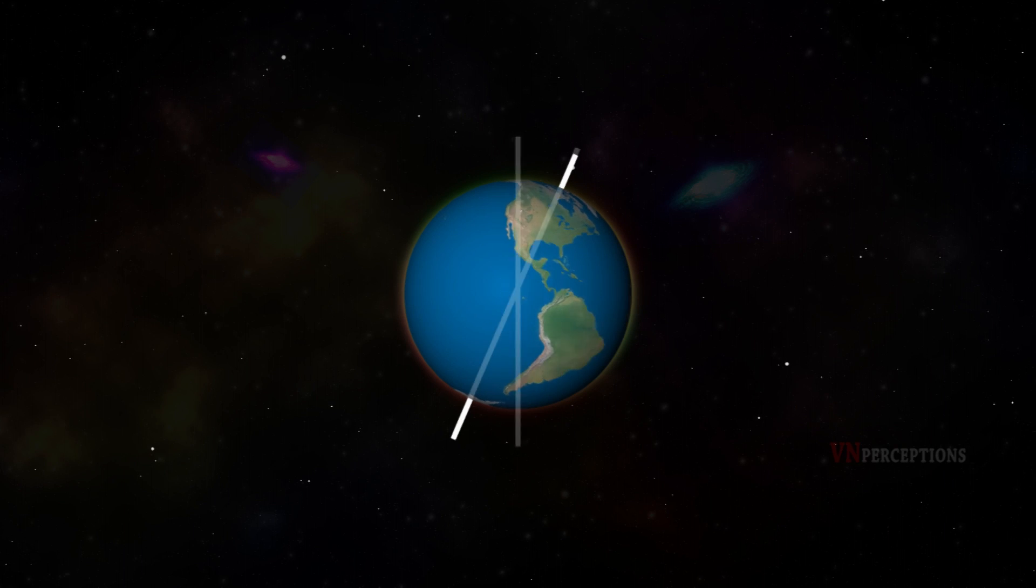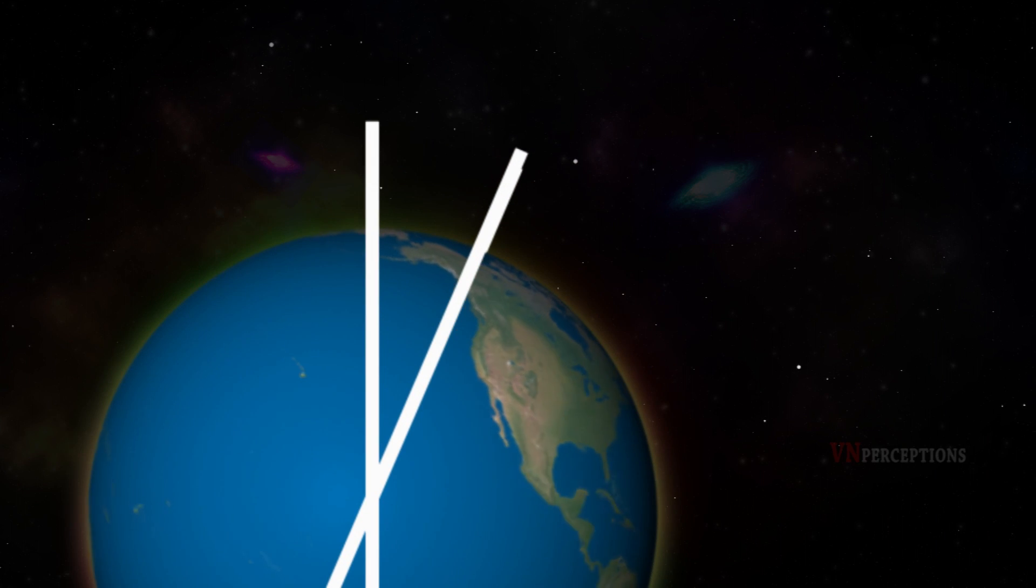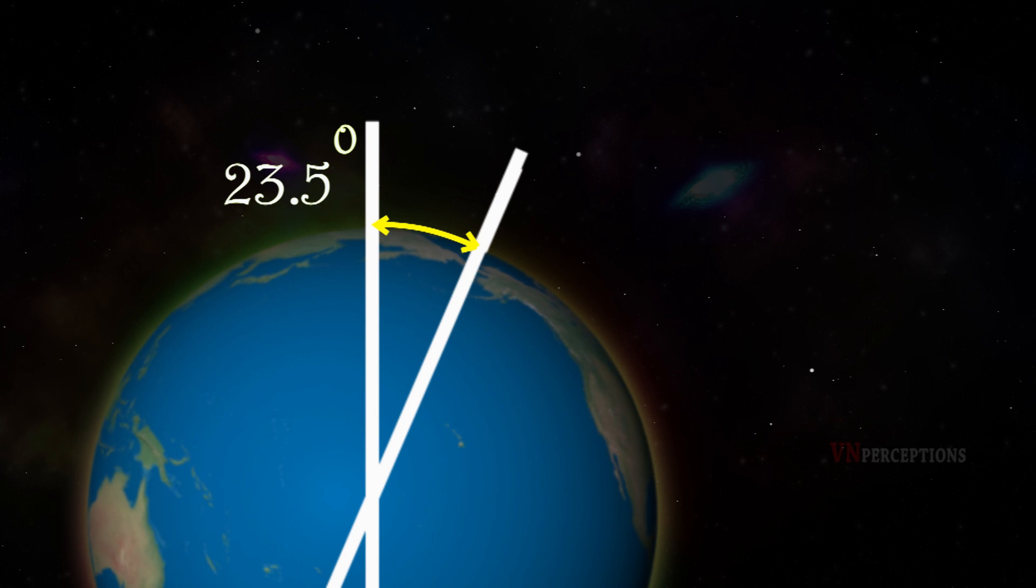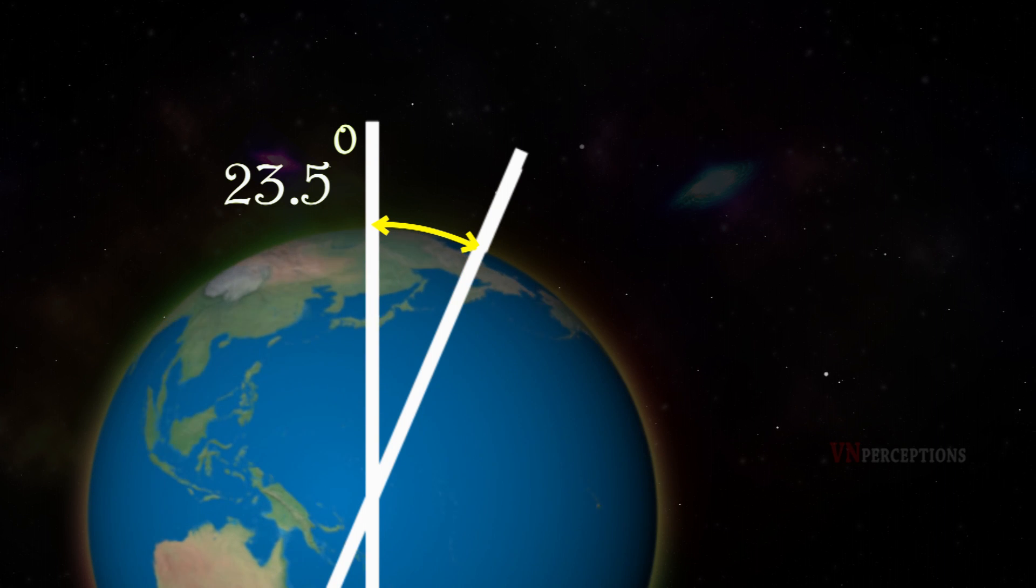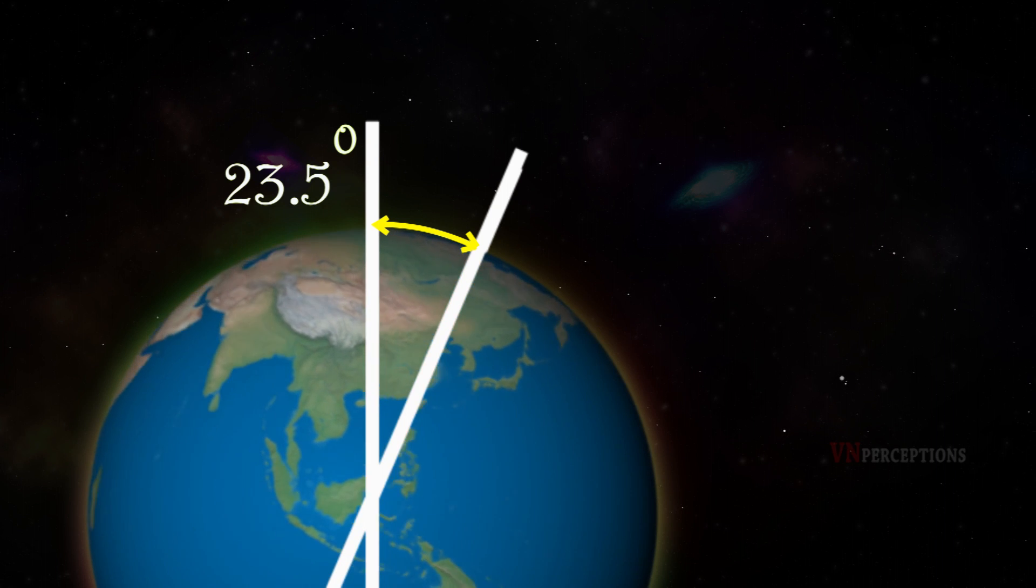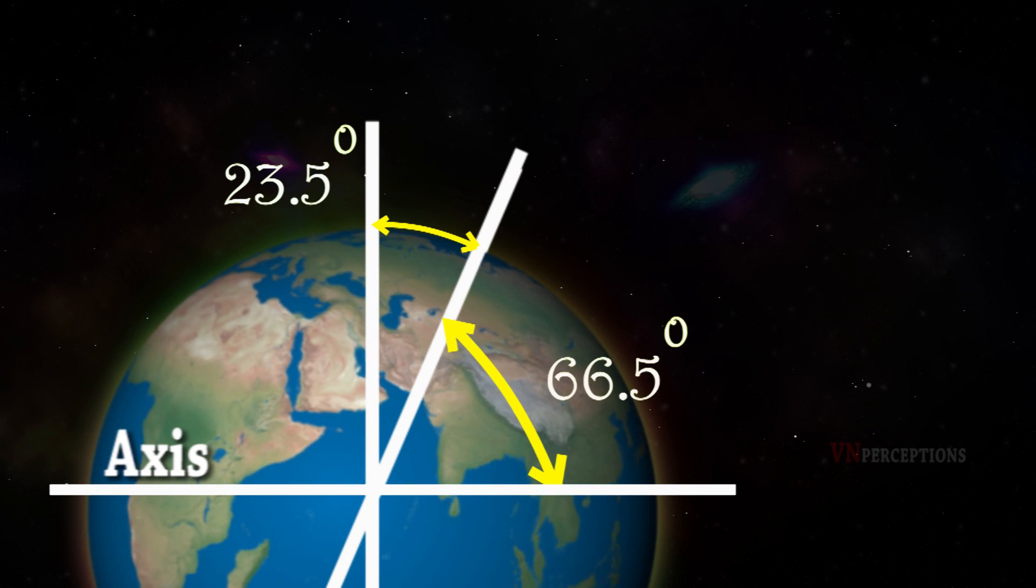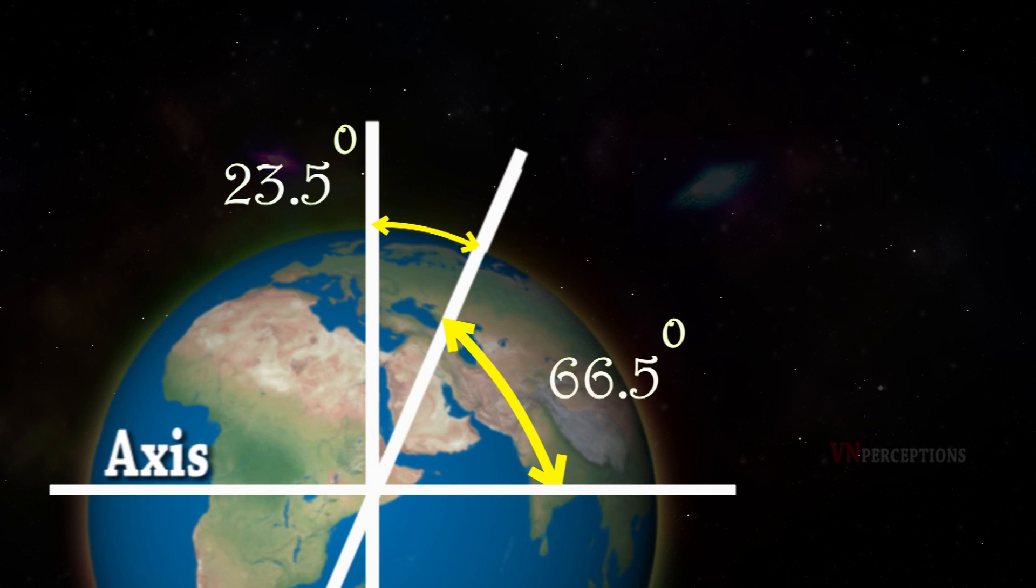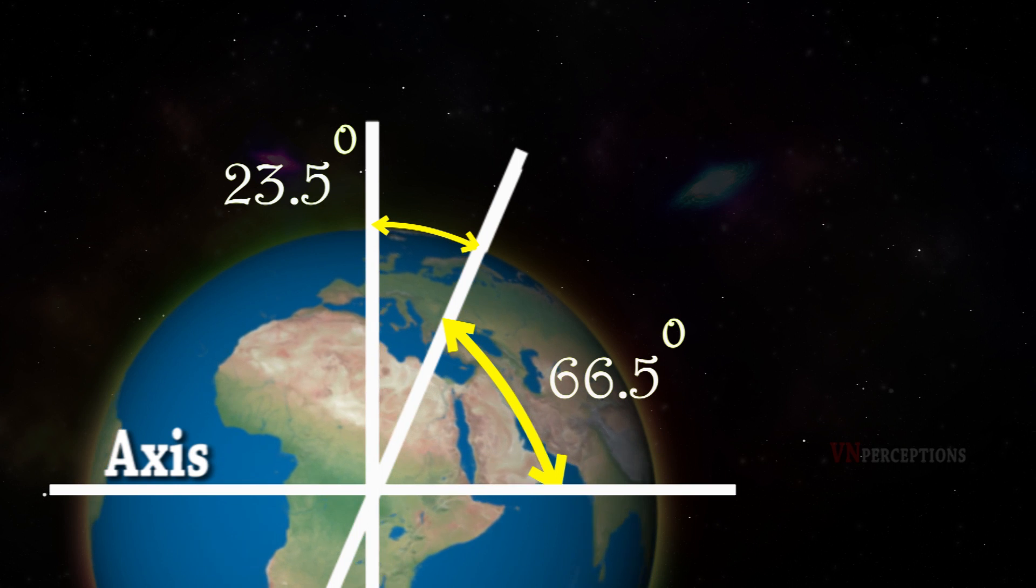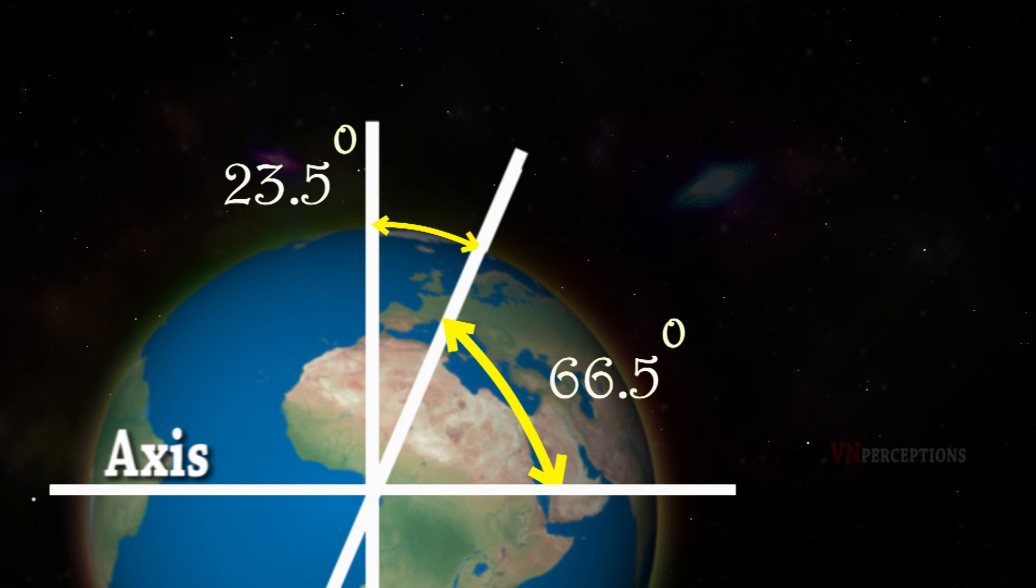The axis is tilted at an angle of 23.5 degrees from the vertical. If a line were drawn parallel to the plane of the Earth's orbit, the axis would make an angle of 66.5 degrees to this line.